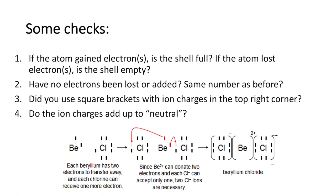With Lewis dot diagrams, there are some checks we want to do. Number one: if the atom gained electrons, is the shell full? At the end result, the negative ion should have gained an electron and as a result should have a full valence shell. If the atom lost electrons, so this is referring to the positive ion, is the shell empty? This is what's symbolized by beryllium at the end. You can see it's empty, whereas the two chlorines have a full eight valence shell. It's referred to as an octet. Have no electrons been lost or added? So do you have the same number as before? If not, go back, check what should be happening.